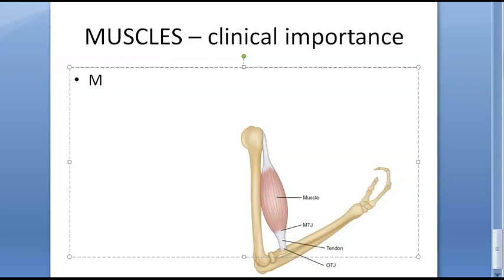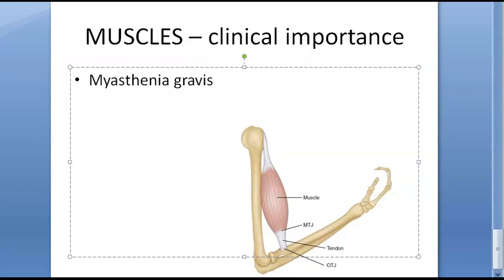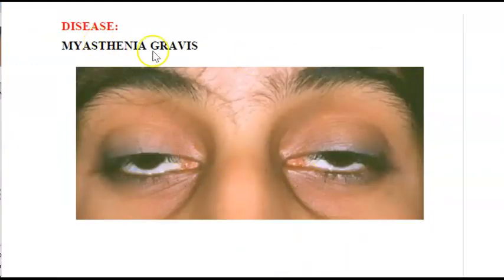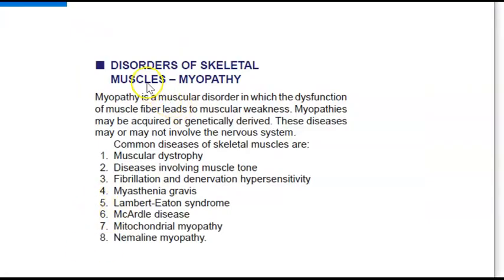Clinical importance: neuromuscular diseases include myasthenia gravis, which causes weakness in skeletal muscles, especially at the end of the day after use. Treatment involves retaining acetylcholine by giving cholinesterase inhibitors such as neostigmine. Other conditions include skeletal muscle myopathy, muscular dystrophies, Lambert-Eaton syndrome, and mitochondrial myopathy.